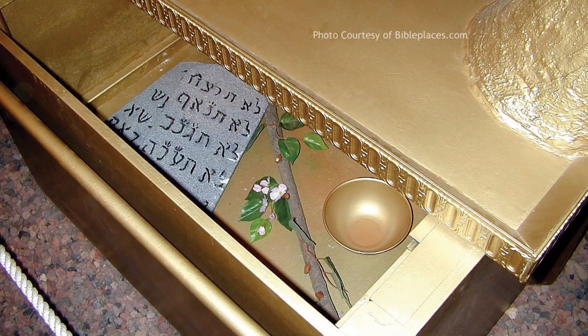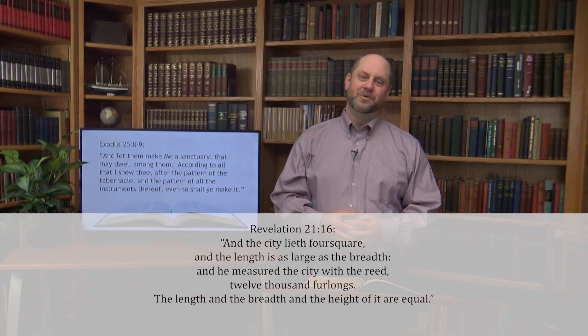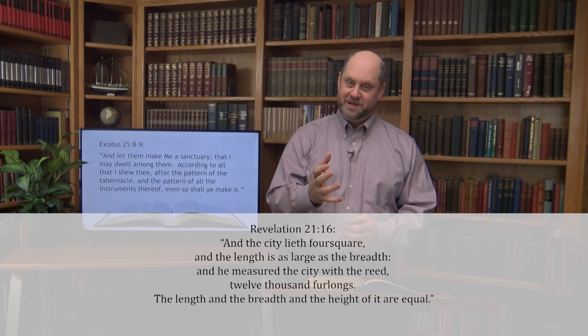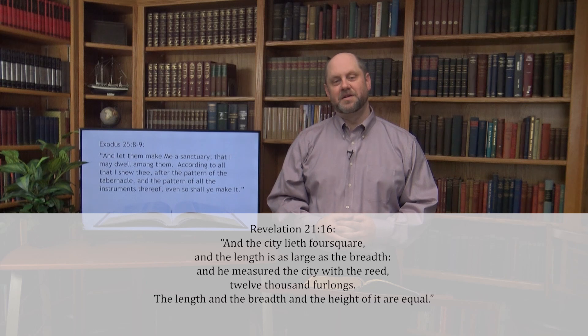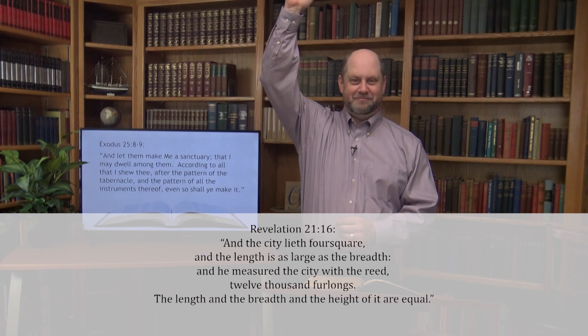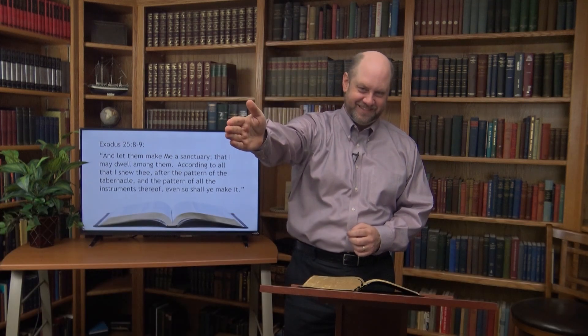The holy of holies contained the Ark of the Covenant. Contained in the Ark were three things: the tablets of the Ten Commandments, manna, and Aaron's rod that budded. The new Jerusalem will also be a perfect cube when it descends to the earth one day at the beginning of the eternal state — 1,400 miles high, 1,400 miles long, 1,400 miles wide. The description of the tabernacle in Exodus 25 begins with the Ark of the Covenant.